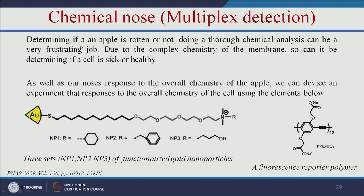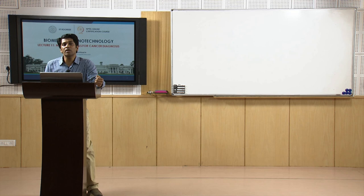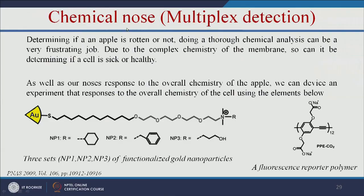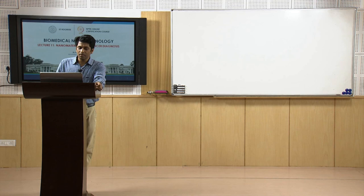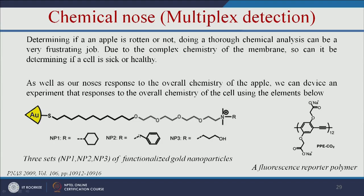Another example is the chemical nose. Just as you can smell a rotten apple in a bunch instead of doing chemical analysis, similarly we can make a chemical nose. This chemical nose is made up of three different types of functionalized gold nanoparticles wrapped with a fluorescent reporter polymer. It can be injected into a person and will bind only to cancer cells to tell whether the person has cancer.